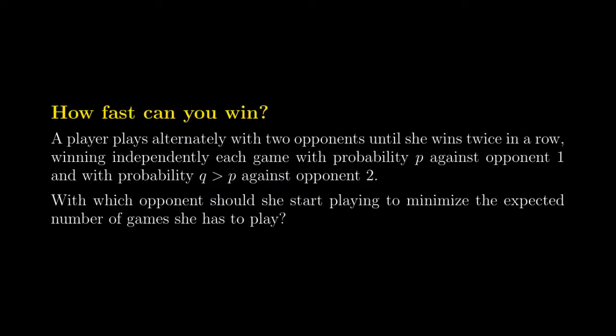Let's assume that a player plays alternatively with two opponents that we call opponents 1 and 2. We assume that the game is going to stop when this player wins twice in a row. We also assume that opponent 1 is a stronger player, in the sense that at each step of the game, our player wins against opponent 1 with probability P and against opponent 2 with probability Q, and we assume that P is less than Q.